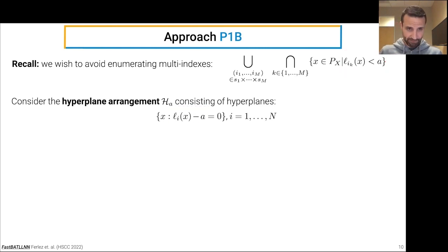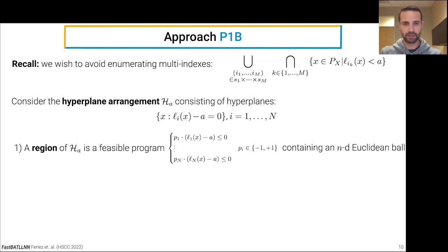And so, in particular, we have several facts. First, a region of this hyperplane arrangement is a feasible linear program of the following form that contains an n-dimensional Euclidean ball. And so this linear program simply multiplies each of the hyperplanes by plus or minus 1 to specify being on one side or the other. But it's important that it has to contain an n-dimensional Euclidean ball. Moreover, the number of regions in this hyperplane arrangement is only polynomial in the number of local linear functions.